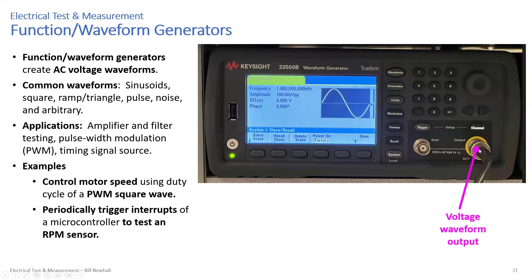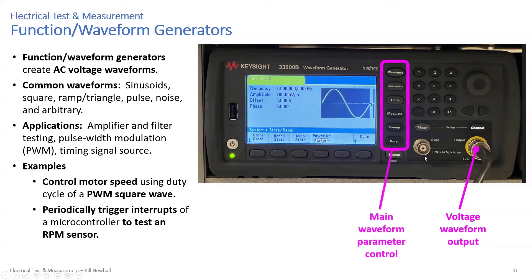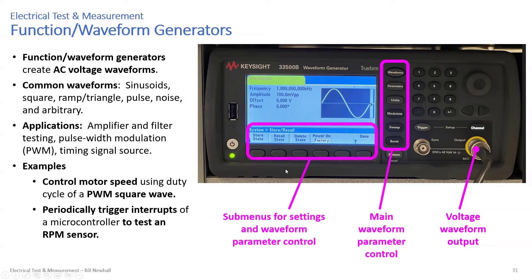On the front panel, the voltage waveform output is a BNC connector. Don't confuse it with the sync connector, which can be used as an input for timing of output waveforms. Notice it says 50 ohms — that means 50-ohm output impedance. The main waveform parameters are controlled with buttons, and this is the particular waveform generator you have in the ITLL lab. Submenus for settings and waveform parameter control appear as you push different main parameter buttons.